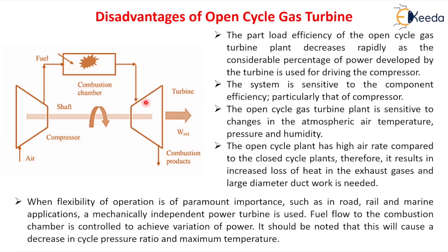Now let's see some disadvantages of open cycle gas turbine power plant. The part load efficiency decreases — part load efficiency is less for open cycle gas turbine. The system is sensitive to component efficiency: if compressor efficiency is less or turbine efficiency is less, the efficiency of the complete plant will be less. Further, the open cycle gas turbine power plant is sensitive to changes in atmospheric air temperature, pressure, and humidity. The open cycle plant has a high air rate compared to the closed cycle plant.